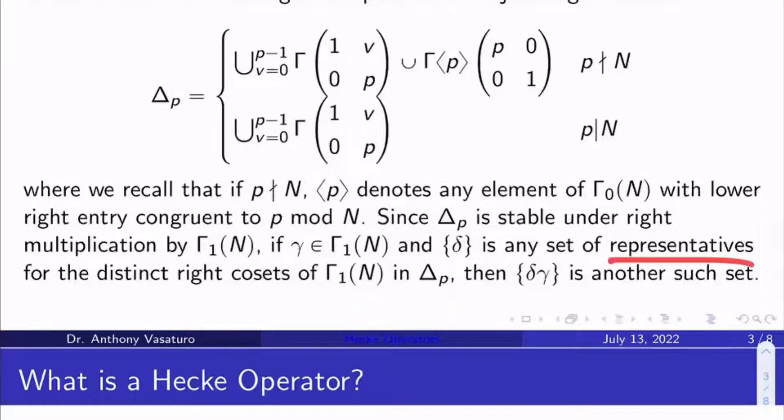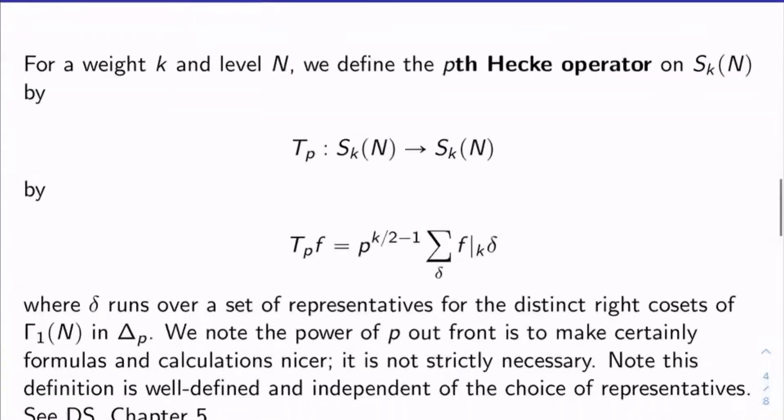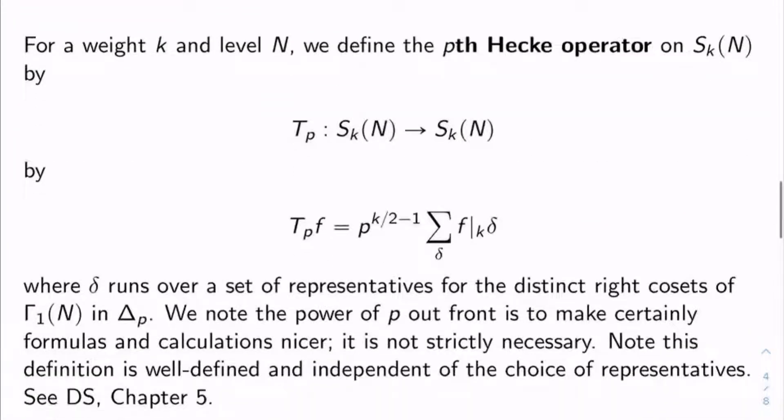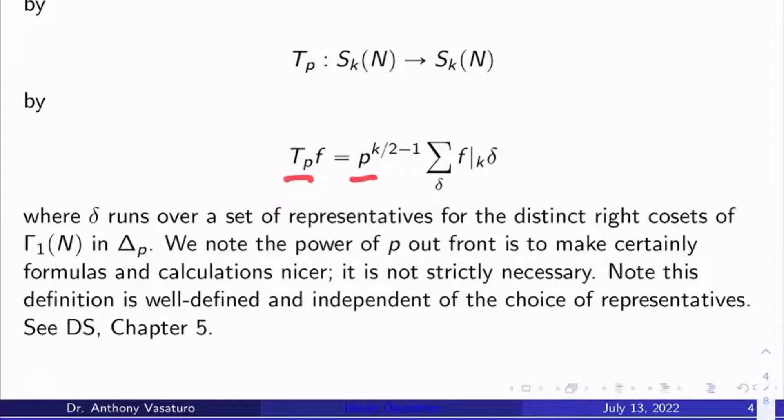Now, so what are the Hecke operators? Well, for a weight k and level n that are handed to you, the pth Hecke operator on s sub k n, so this is the weight k level n cusp forms, is a map T_p from s_k(n) to s_k(n). So it's a linear operator like you think it should be. And here's what it is. T sub p of f is p to the k over 2 minus 1 power times the sum over delta of f bar sub k delta, where delta runs over a set of representatives for the distinct right cosets of gamma sub 1 of n in delta p.